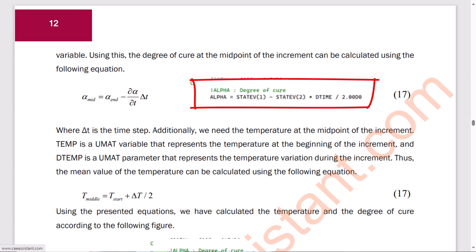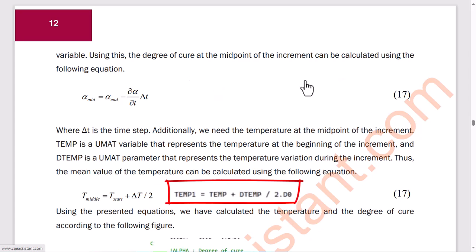Additionally, we calculated the temperature at the midpoint of the increment. The UMAT variable, temp, represents the temperature at the beginning of the increment, while the UMAT parameter, dtemp, represents the temperature variation during the increment. Using these, the mean temperature can be calculated with the provided equation. With these equations, the temperature and the degree of cure were calculated as shown in the figure.